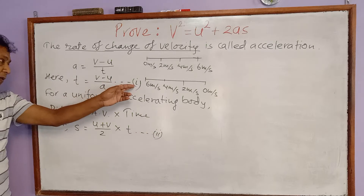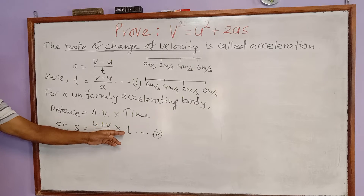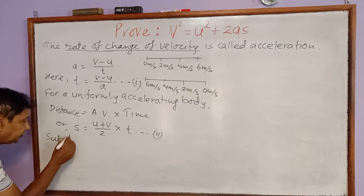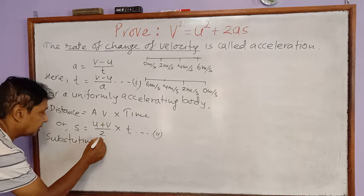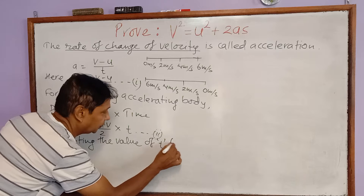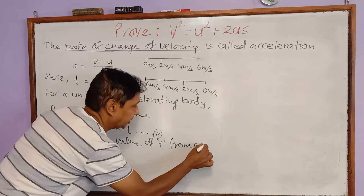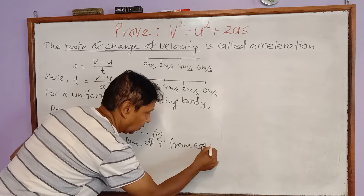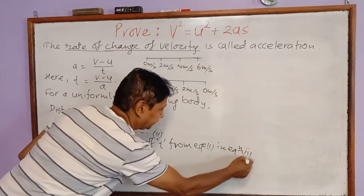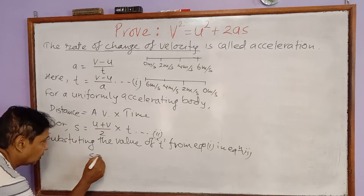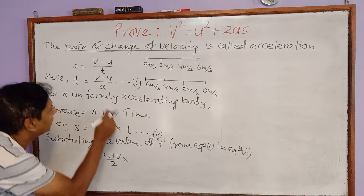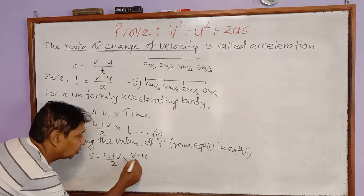Now I am going to substitute equation 1 into equation 2. By substituting the value of t from equation 1 into equation 2, we get: S equals u plus v divided by 2, multiplied by v minus u divided by a.